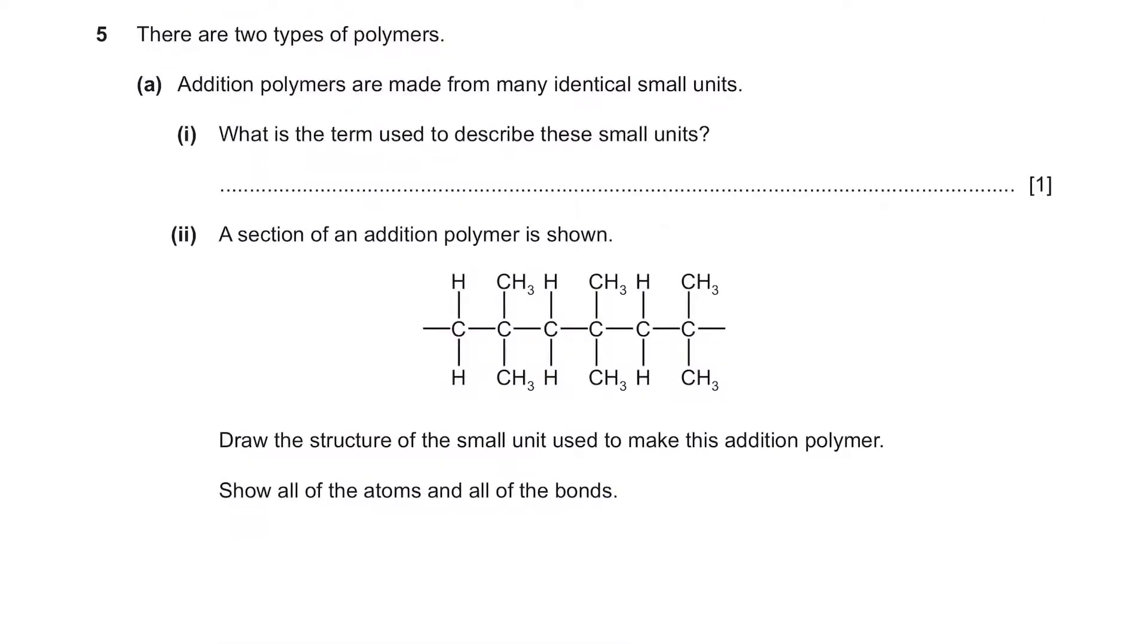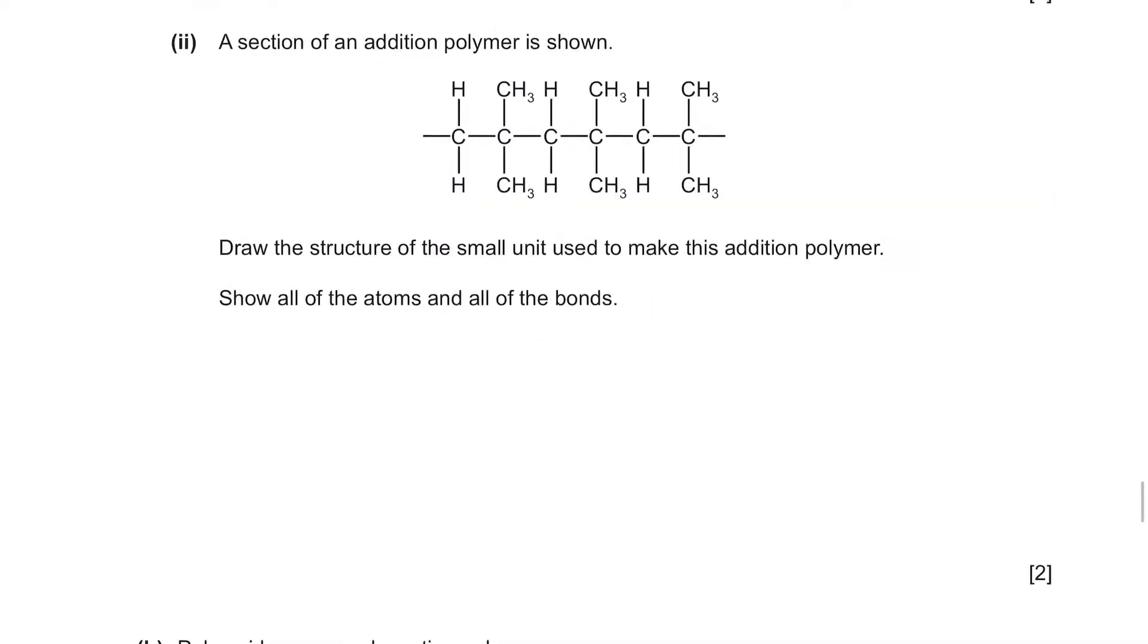Number 5. There are two types of polymers. Addition polymers are made from many identical small units. What is the term used to describe these small units? It's called a monomer. Next, a section of an addition polymer is shown, and it says draw the structure of the small unit used to make this addition polymer. Show all of the atoms and all of the bonds.